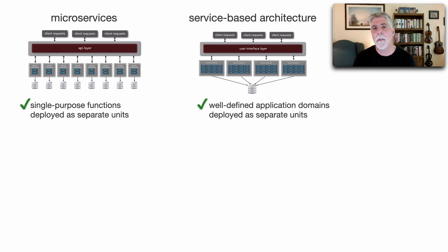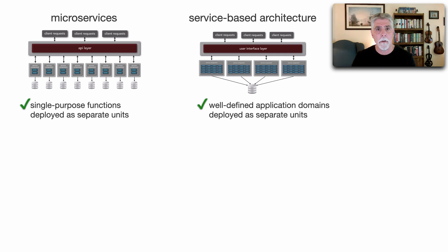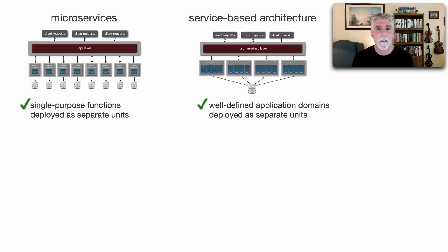Within service-based architecture, we typically have very coarse-grained services where the service itself contains all of the domain functionality — for example, all of customer functionality. Whereas with microservices, we typically split up services within a domain into subdomains, and sometimes even further than that.